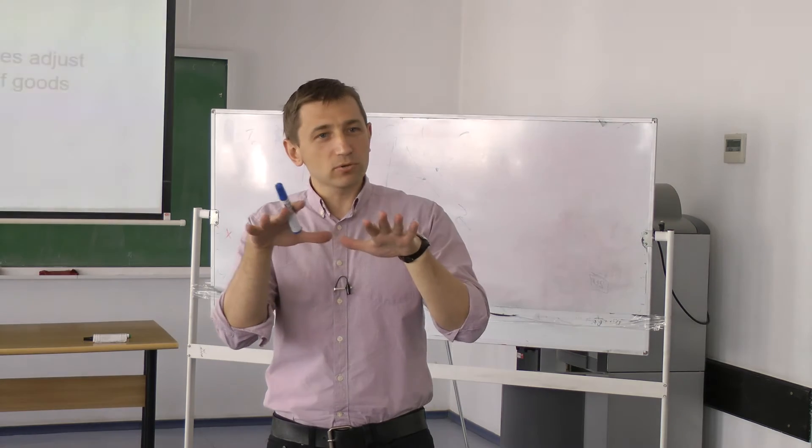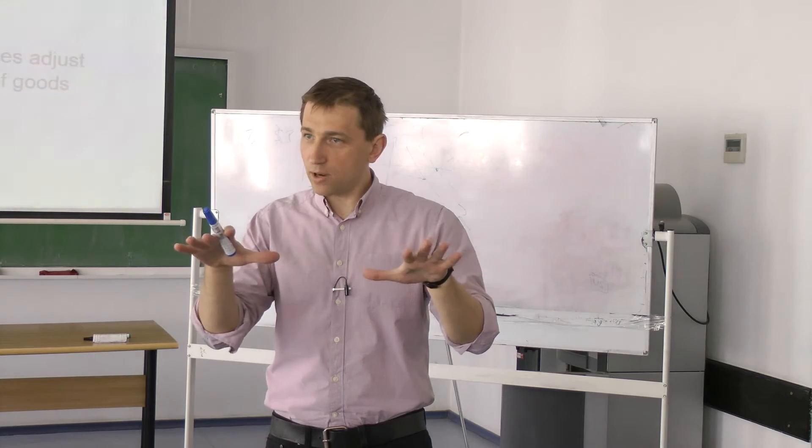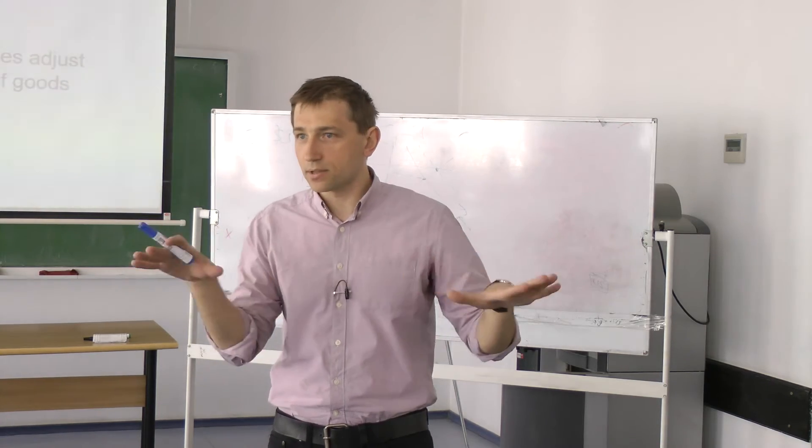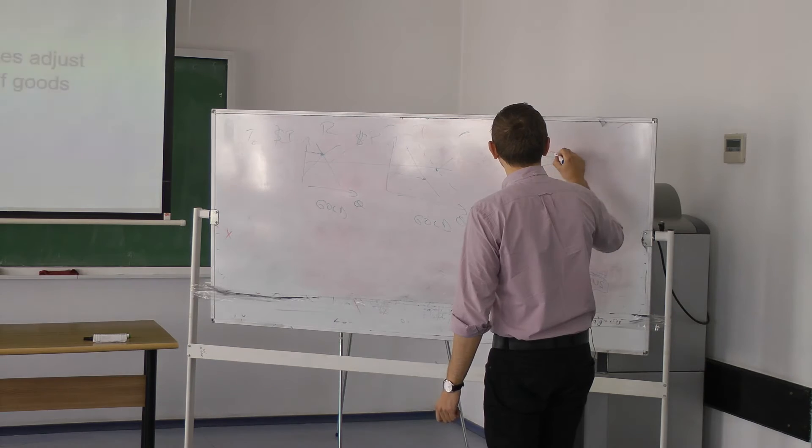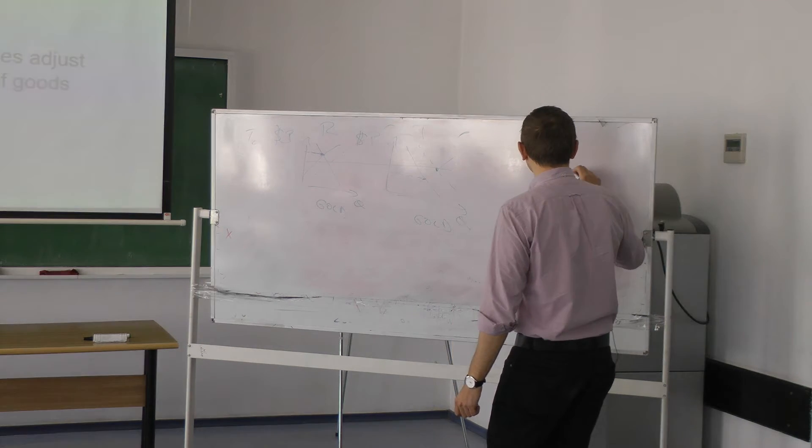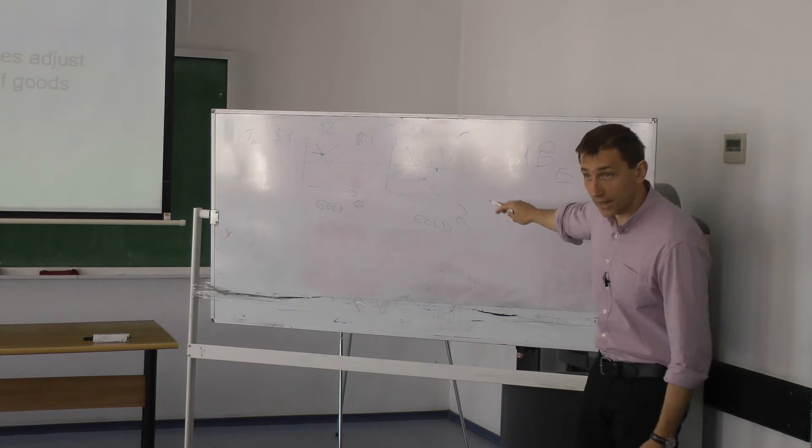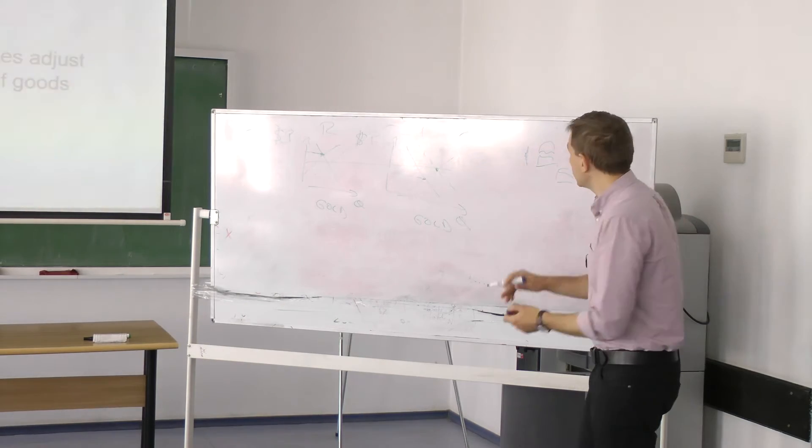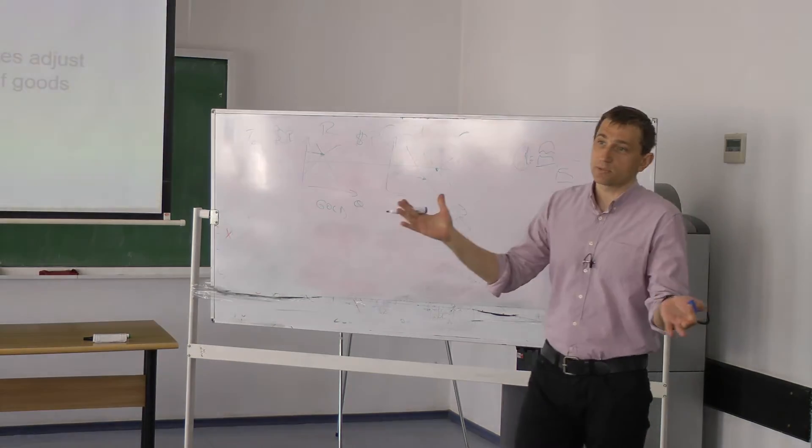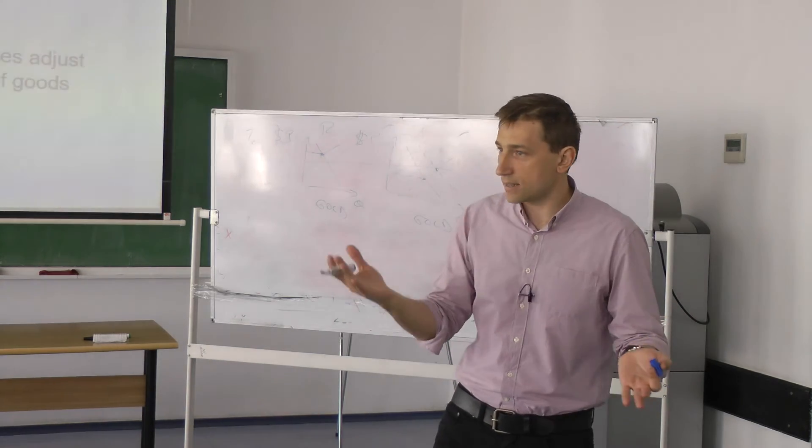You can have absolute purchasing power parity, which means that you really believe that arbitrage will solve any difference, which will make the real exchange rate equal to one. So if it's one Romanian Big Mac for one American Big Mac, which means the nominal exchange rate is in perfect equilibrium with the price in U.S. and the price in Romania, then I can say there is no arbitrage possibility. It's one. It doesn't matter where you buy the Big Mac, in Romania or in U.S., it's the same thing.